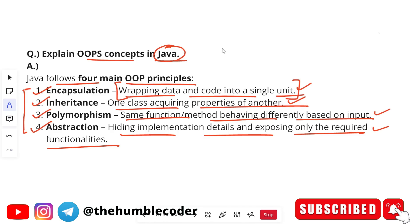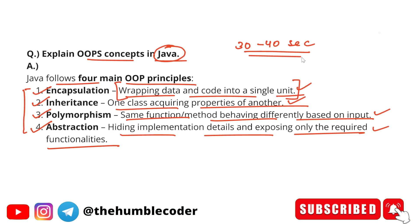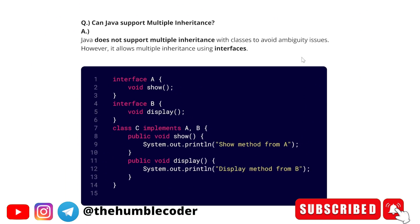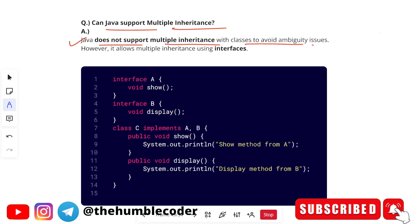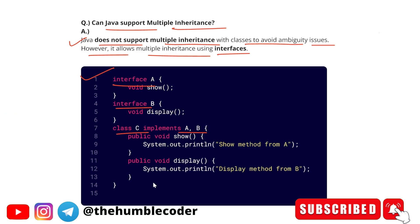The next question is: can Java support multiple inheritance? Java does not support multiple inheritance with classes to avoid ambiguity issues. However, it allows multiple inheritance using interfaces. I've taken one example of multiple inheritance in Java using interfaces — you can see it for reference. If you have any doubts, let me know in the comments. All Java folks will understand this.